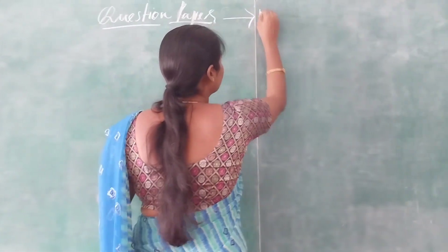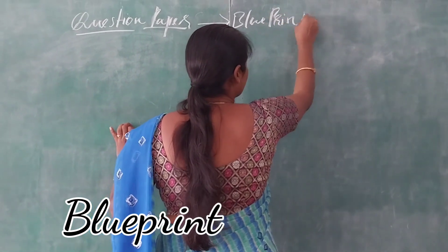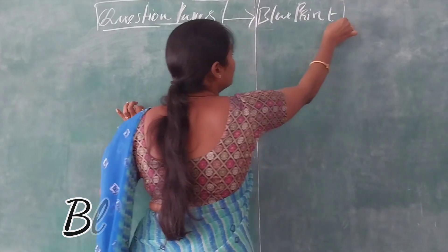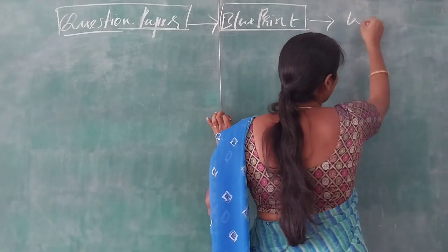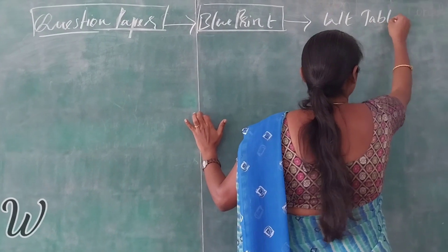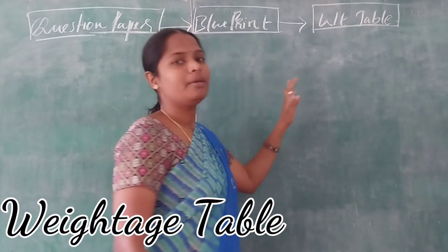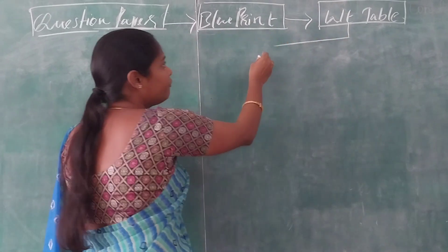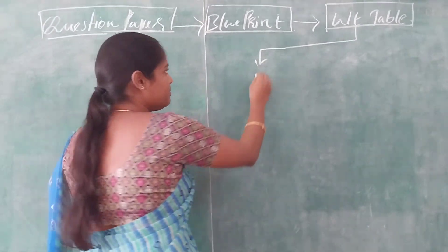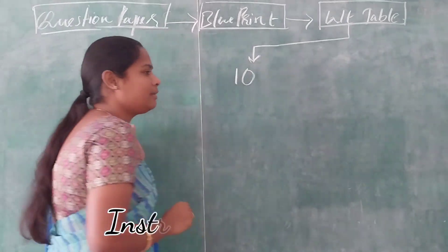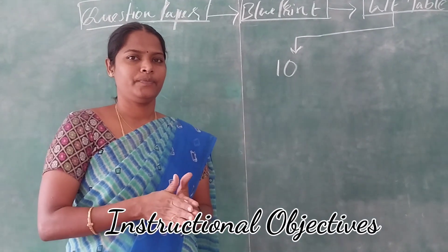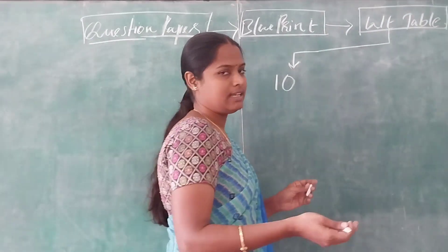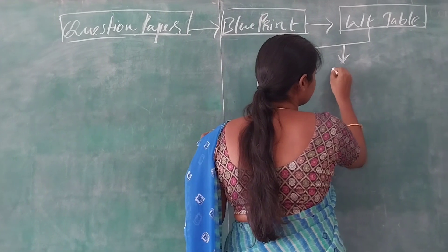To prepare a question paper, we should know how to prepare a blueprint. To prepare a blueprint, we should have a table of specifications. The first variable in the table of specifications depends on instructional objectives — that means what are the instructional objectives. We are having four instructional objectives, which we will see later.